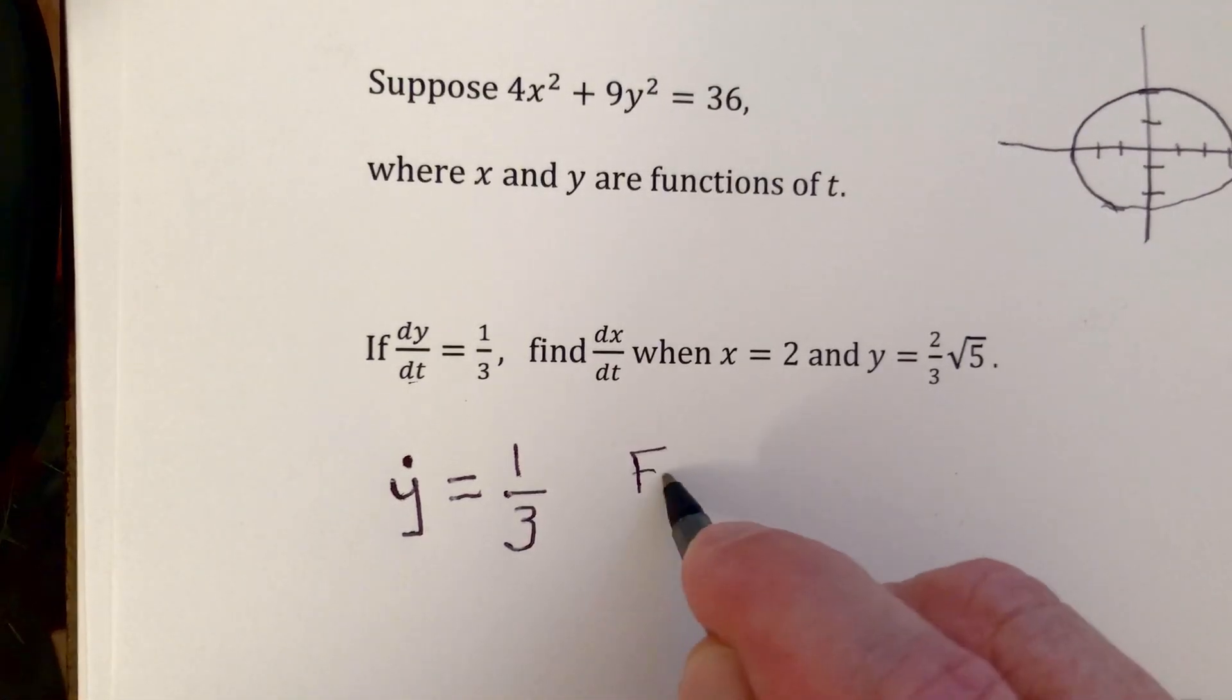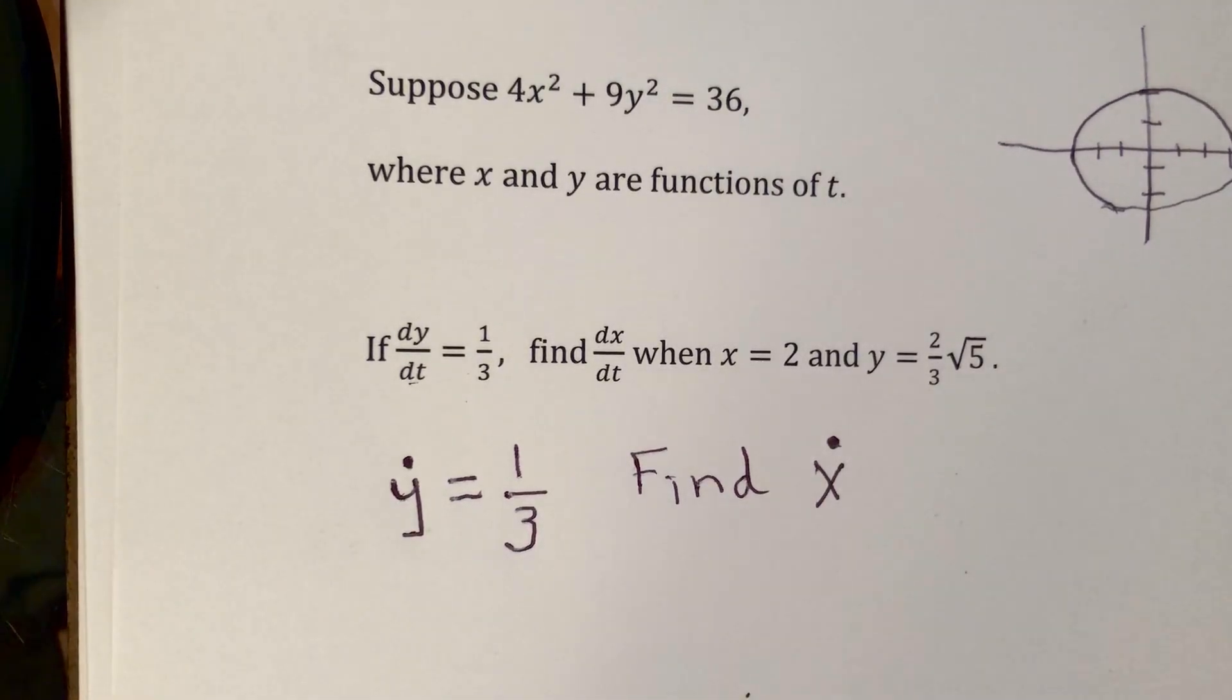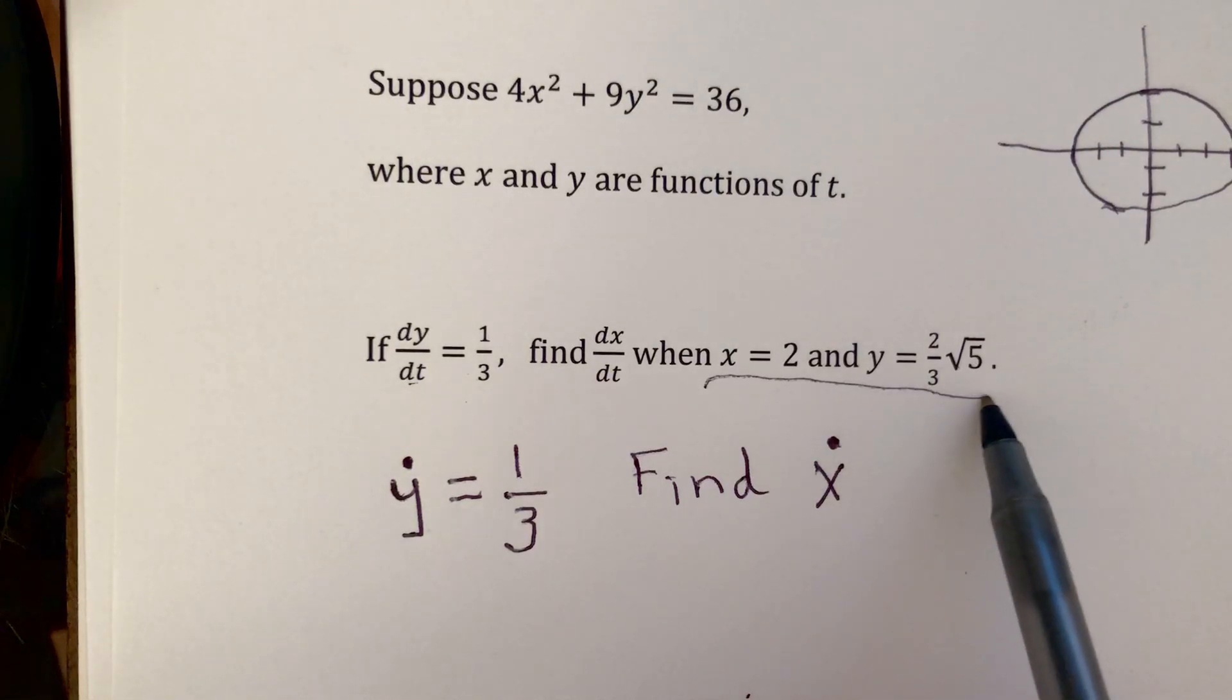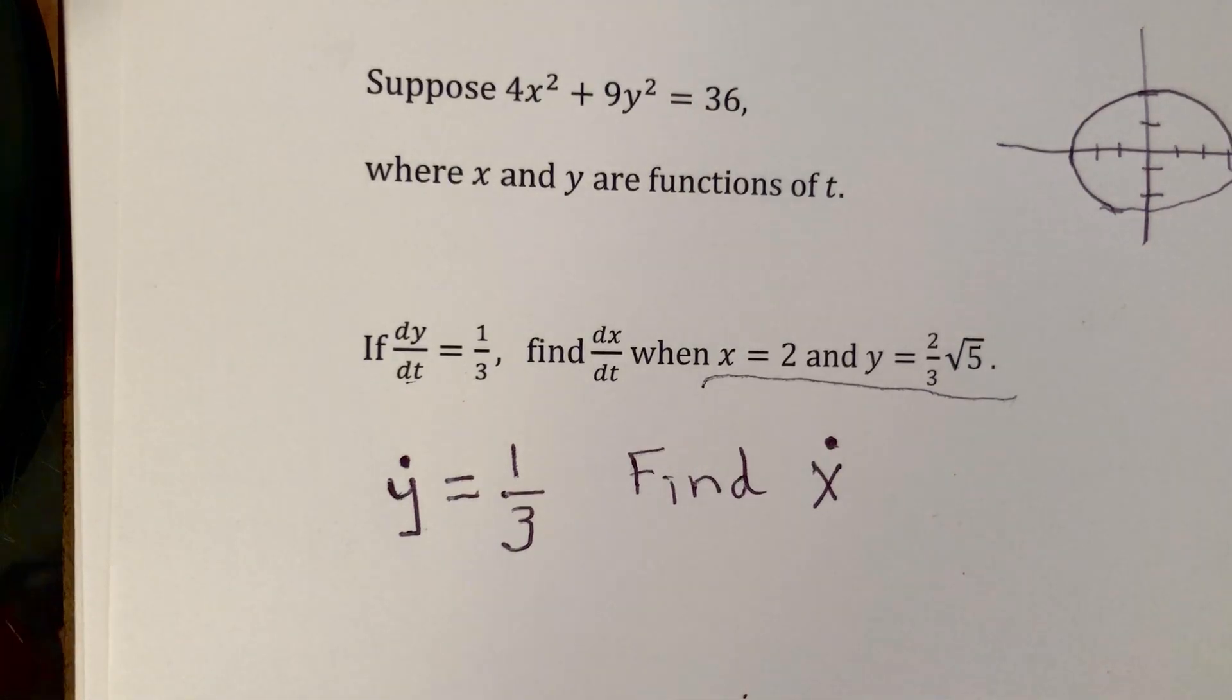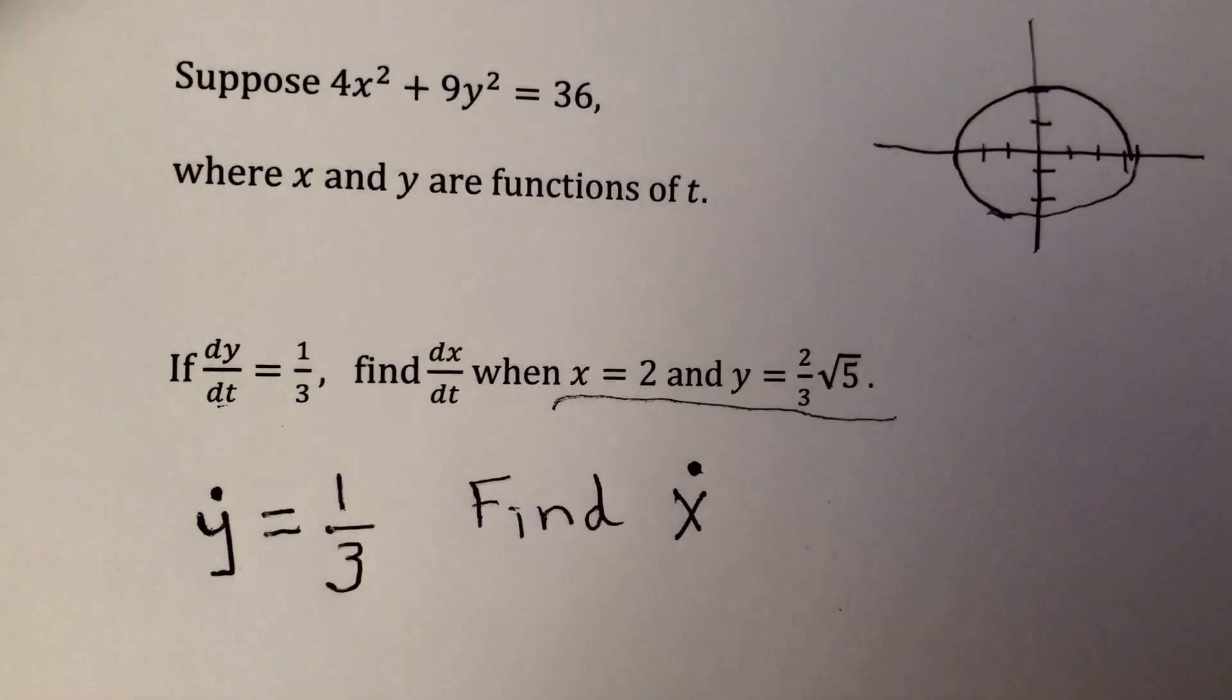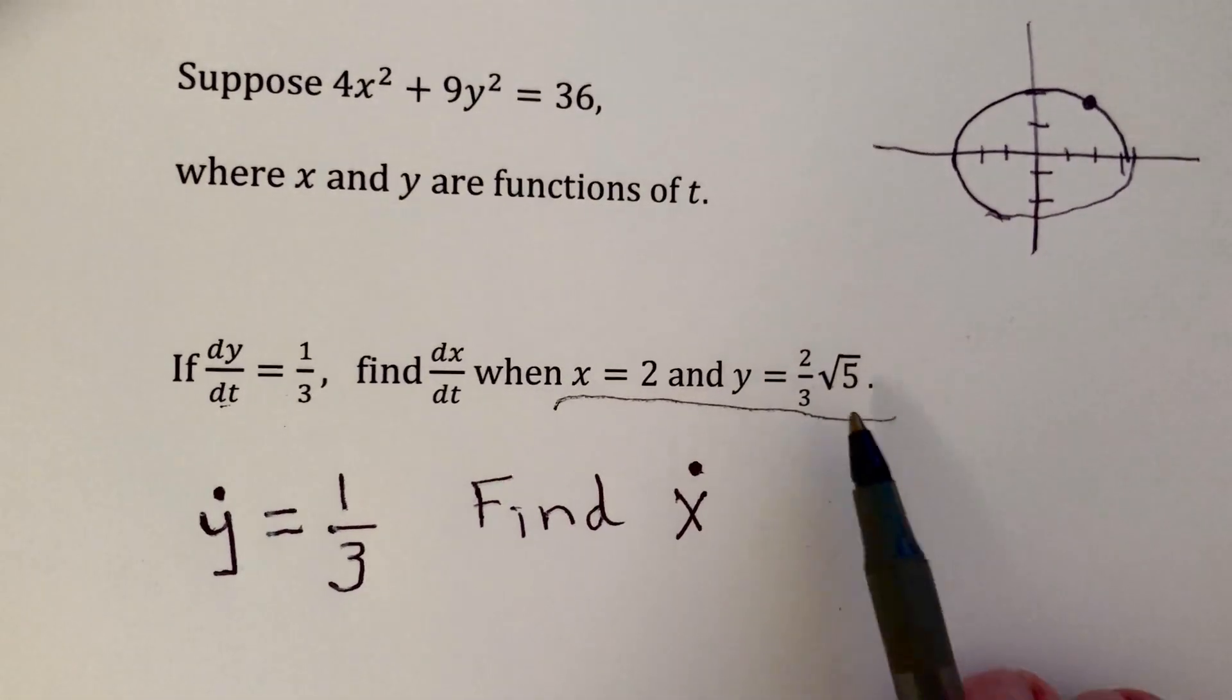So we're asked for dx dt. So we're going to call that x dot. And it's at a given instant when x is equal to 2 and y is equal to 2 thirds times the square root of 5. So we're in the first quadrant.